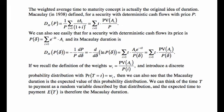If we reintroduce weights W_t and introduce a discrete probability distribution — where the probability that T equals little t is W_t — then the Macaulay duration is actually the expected value of this probability distribution. We can think of the time t to payment as a random variable described by this distribution, and the expected time is the Macaulay duration.